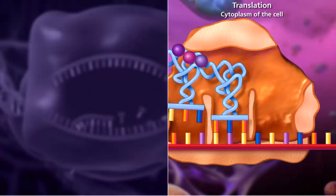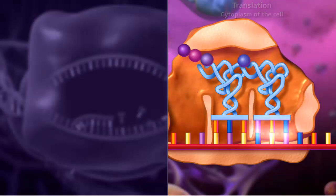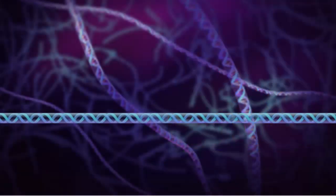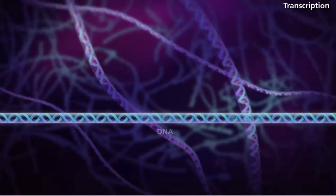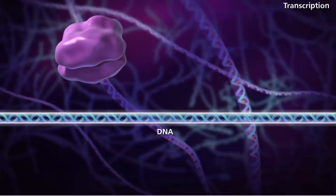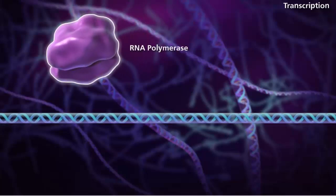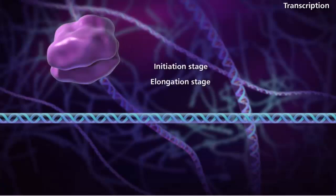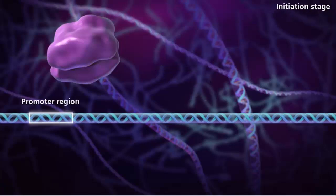During transcription, the DNA in the gene is used as a template to make a messenger RNA strand with the help of the enzyme RNA polymerase. This process occurs in three stages: initiation, elongation, and termination. During initiation, the promoter region of the gene functions as a recognition site for RNA polymerase to bind.